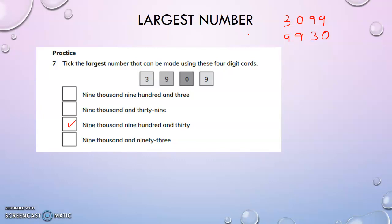To find the largest number, arrange the digits in descending order. To find the smallest number, arrange the digits in ascending order. If one of the digit cards is zero, keep zero aside, find the smallest non-zero digit for the highest place value, then arrange the rest in ascending order — that gives the smallest four-digit number. So four-digit largest and smallest numbers are clear.